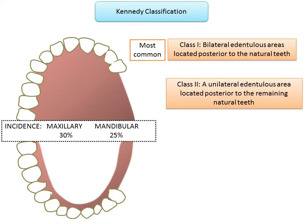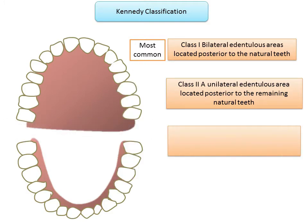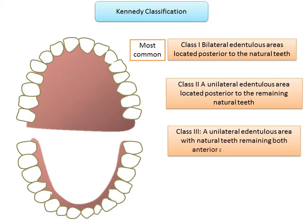Class 3 is a unilateral edentulous area with natural teeth both anterior and posterior to it. In this case, there is a single edentulous area which does not cross the midline of the arch, and teeth are present on both sides — anterior and posterior to it.